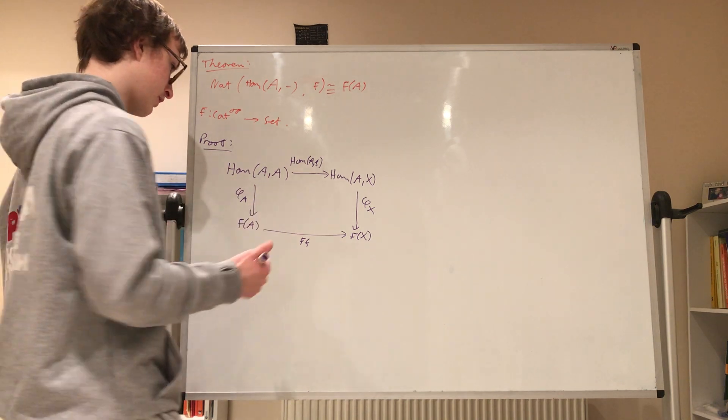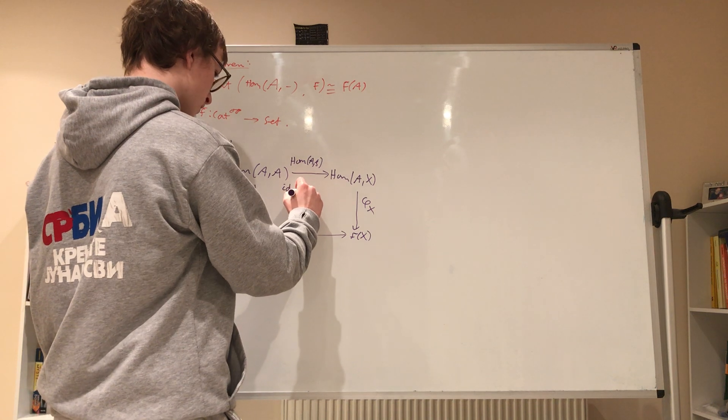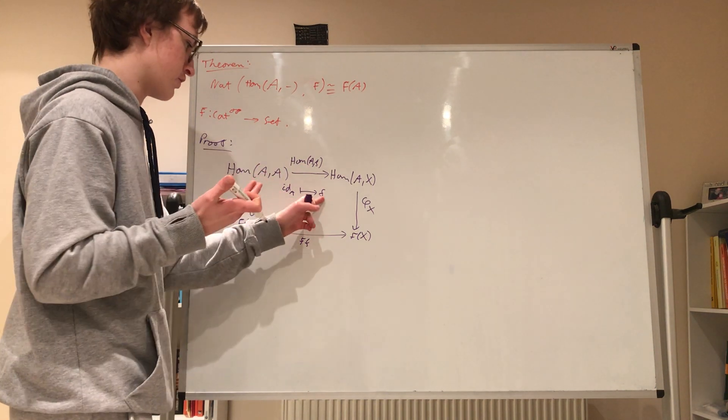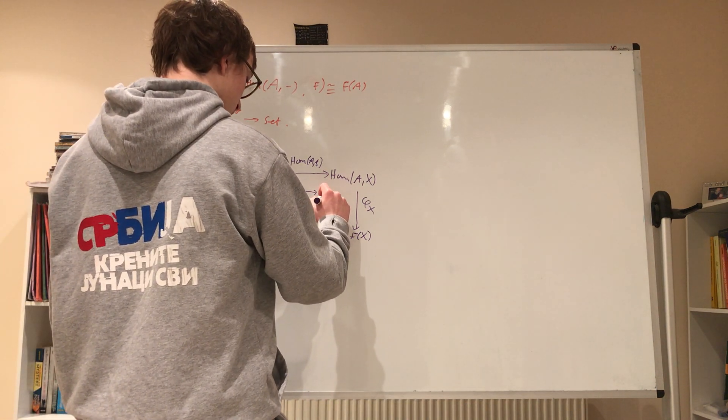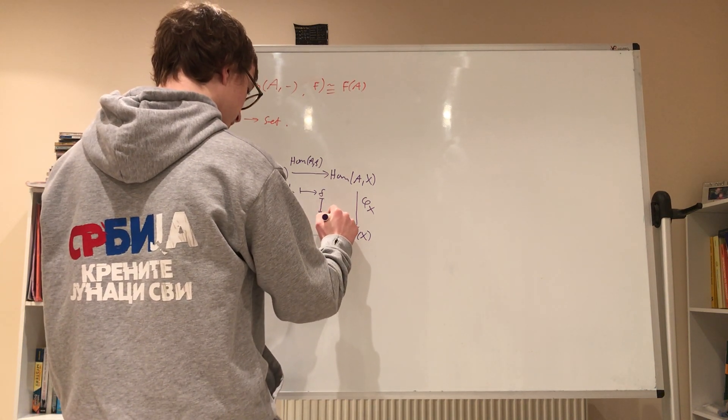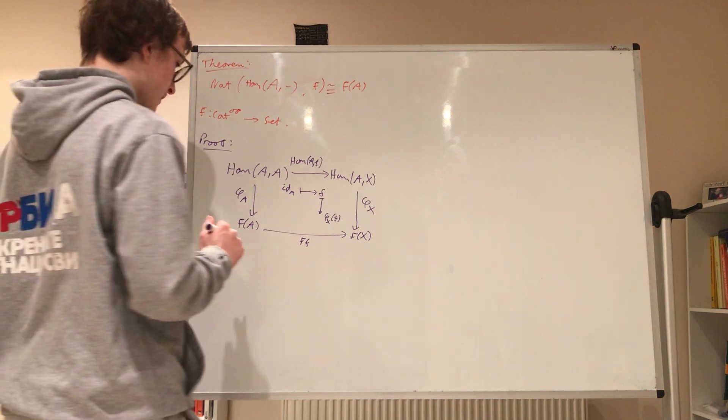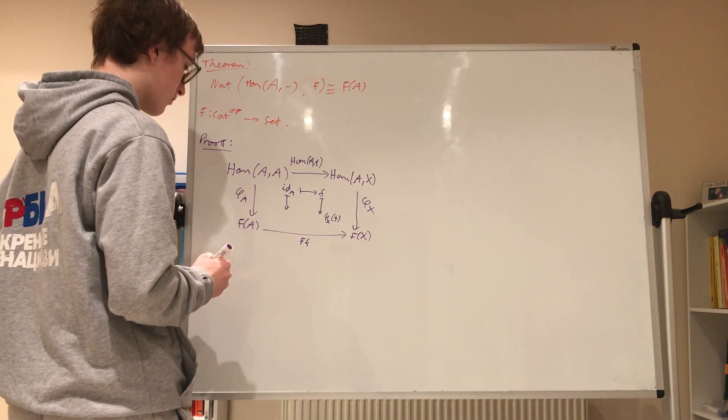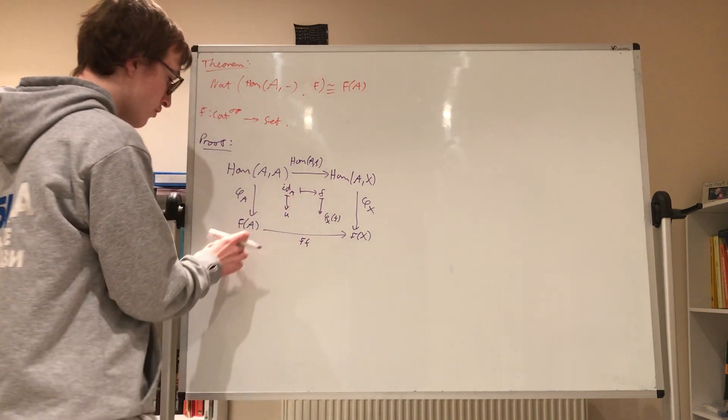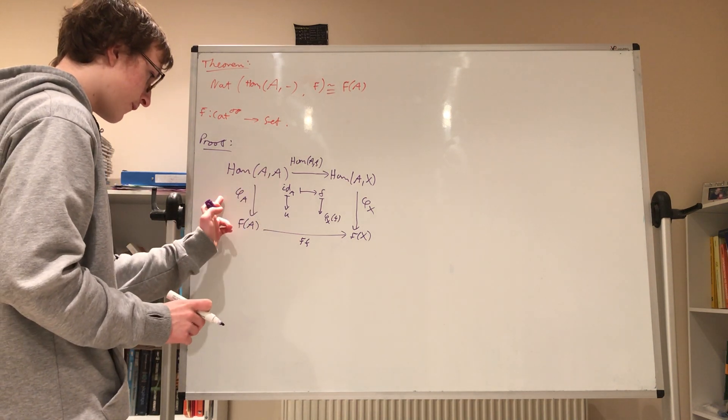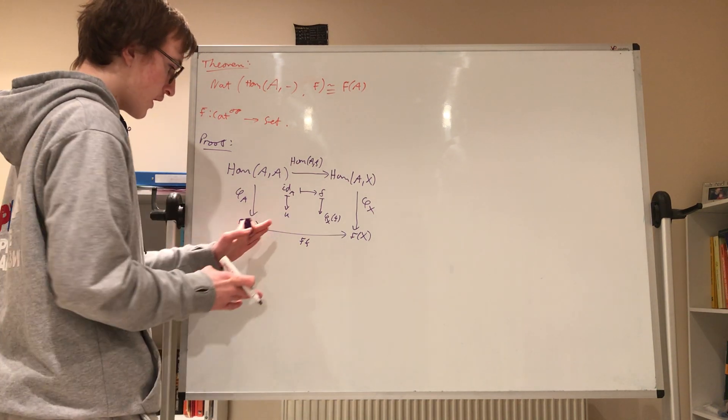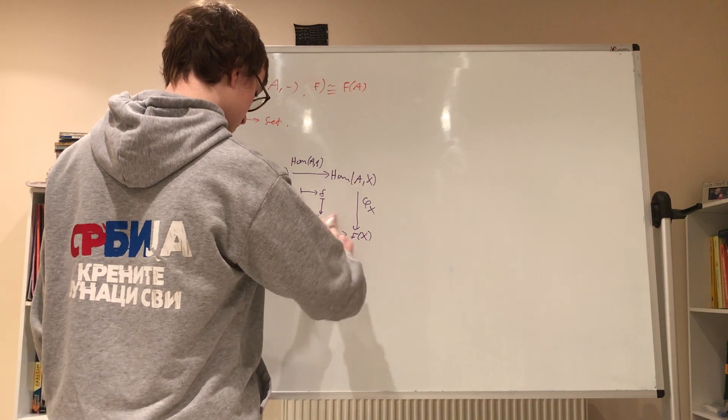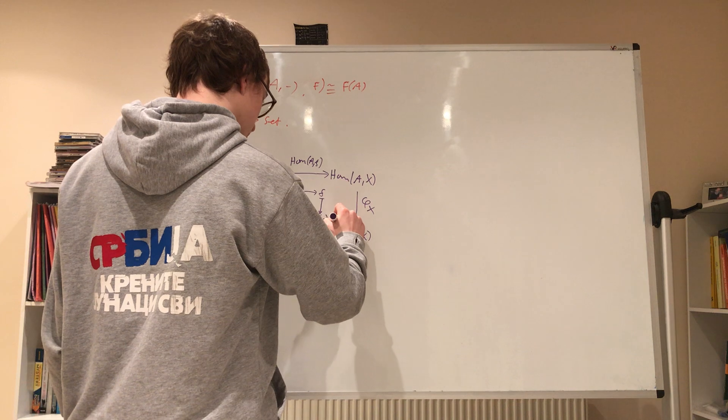So, let's see what happens when we plug in the identity. Well, the identity, on the one hand, it's going to get mapped to F, just by the definition of Hom_A(F), but if you pre-compose with the identity, you're just going to get back your original map, and then this is going to go down to phi_X of F. However, this is the same as going down to some U, some element U of F of A. This is just phi_A of the identity maps to some element U, which could be any element U of F of A, and then this gets mapped to F(F) of U, and this is equal to phi_X of F.